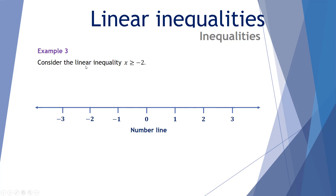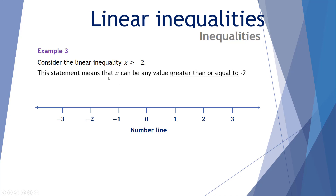Example number 3: consider the linear inequality x ≥ -2. This statement means that x can be any value greater than or equal to negative 2. On the number line, we have negative 2 this time filled. This represents negative 2 inclusive and all values greater than. The filled circle means this number is included in the set, and the arrow to the right means all numbers greater than.